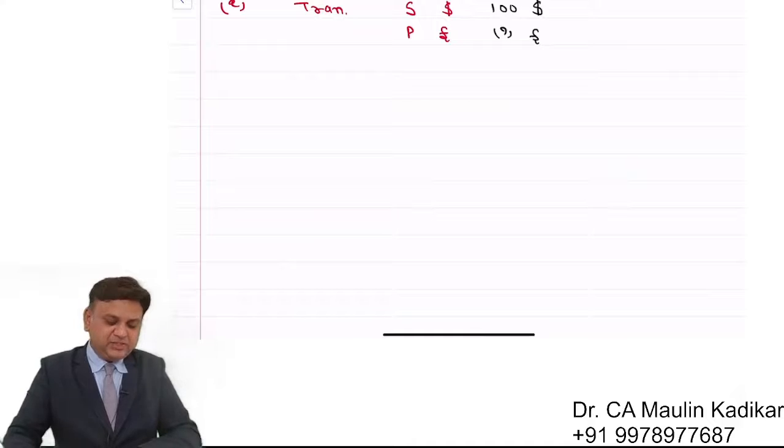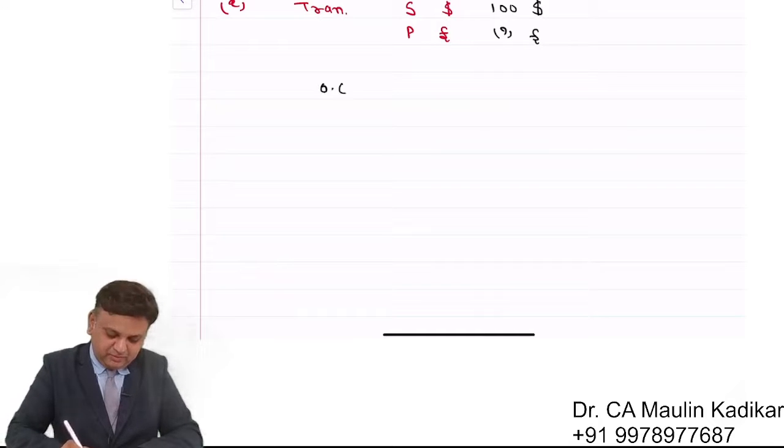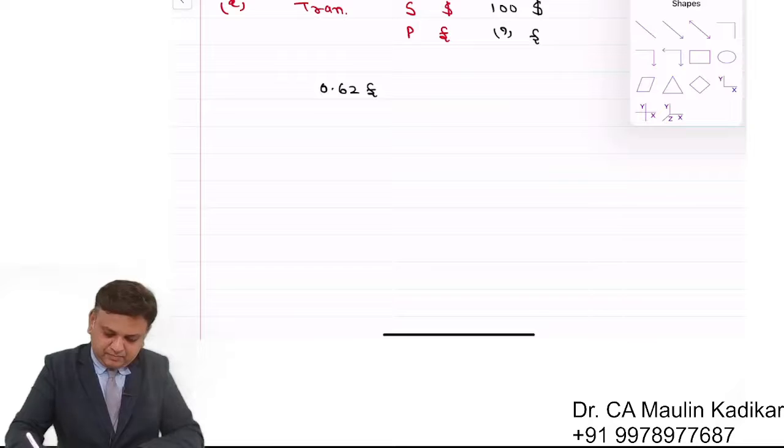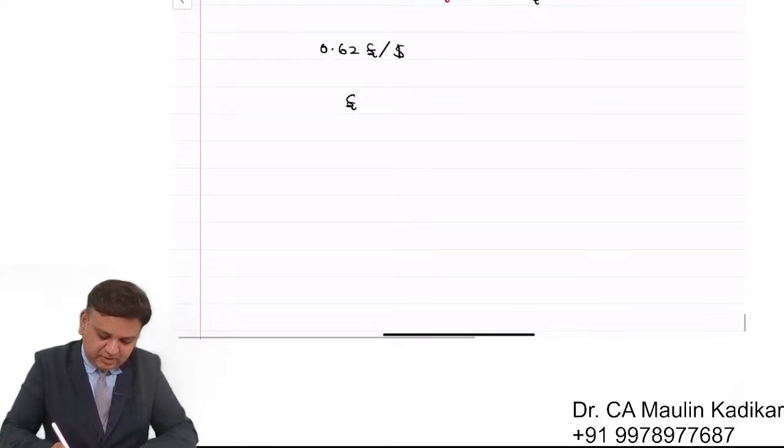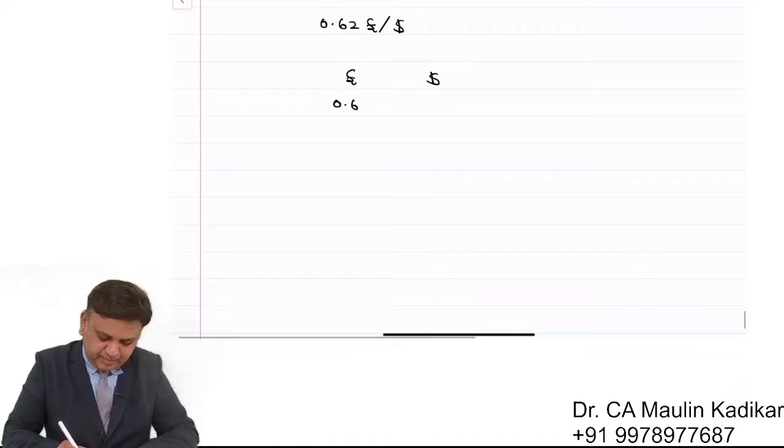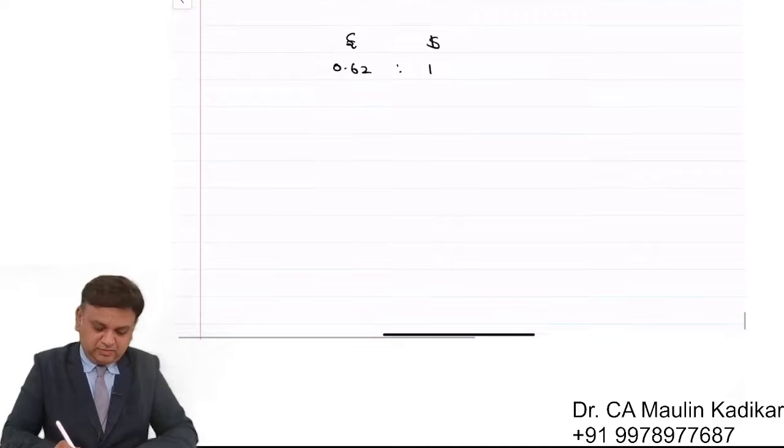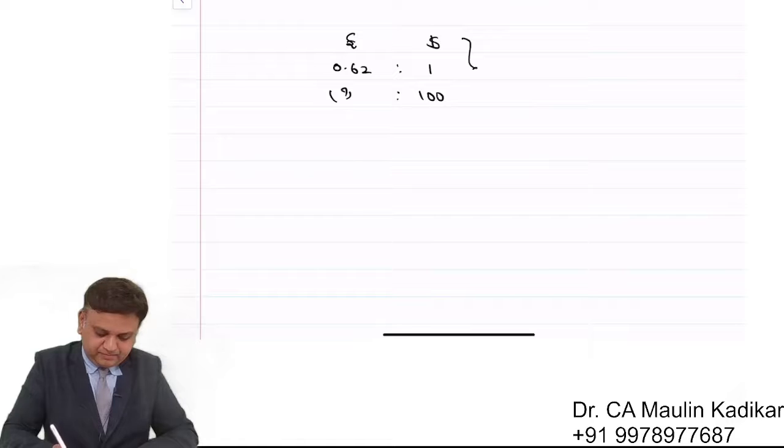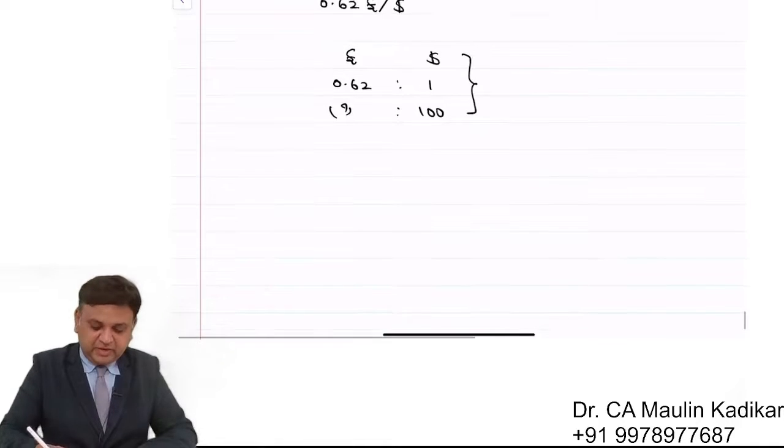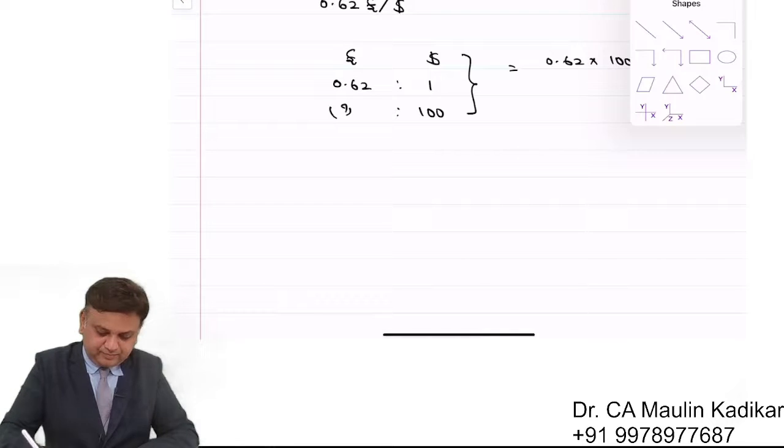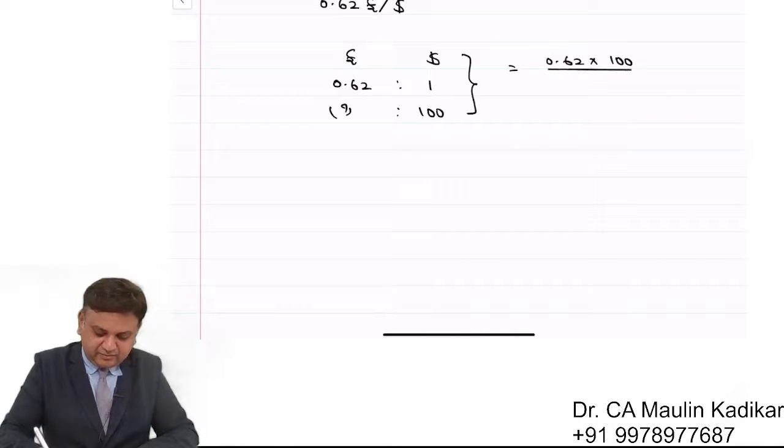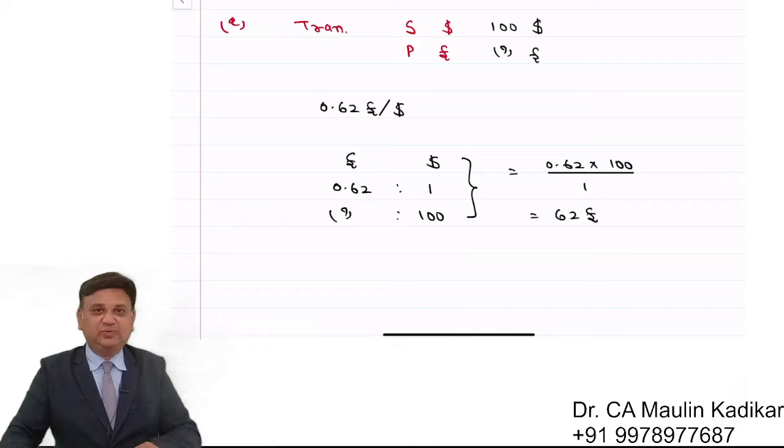The exchange rate we have given is 0.62 pound per dollar. So here we have pound and dollar: 0.62 pound is equal to one dollar. So the question says how much amount of pound for $100? So the answer is 0.62 into 100 divided by 1. So the answer would be 62 pounds.